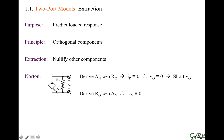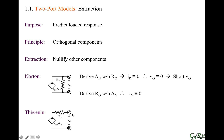If we have a Thevenin equivalent model — a voltage source in series with a resistor — when we derive the gain of the voltage source, we need to nullify the effects of the resistor. That means the voltage dropped across this resistor needs to be zero. For the voltage to be zero, the current running through it needs to be zero, and the only way for that to happen is when the output is open circuited. So we need to remove the load.